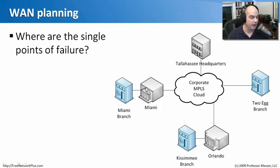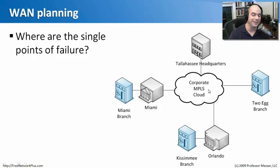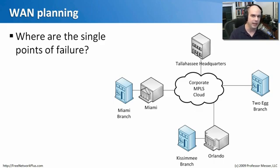There are points of failure between our main buildings and our branches, and points of failure directly into our MPLS cloud. The MPLS cloud is something that's usually managed by a third party provider. Inside the cloud, there is usually redundancy — multiple switches and multiple paths. But you also have to check with your wide area network provider to make sure that they have that level of redundancy inside of their cloud, because it's not always the case.